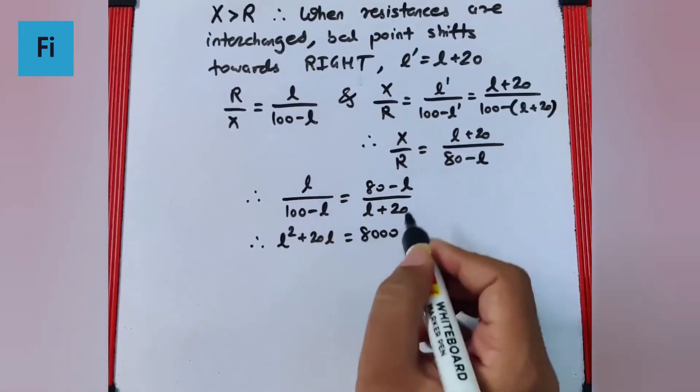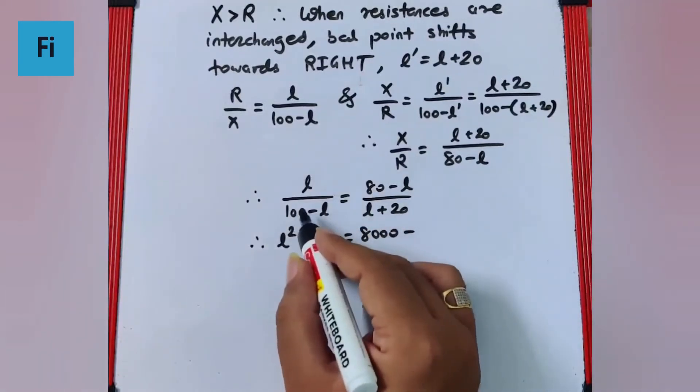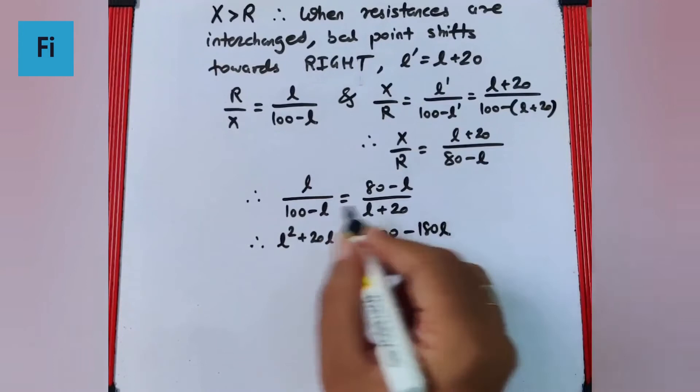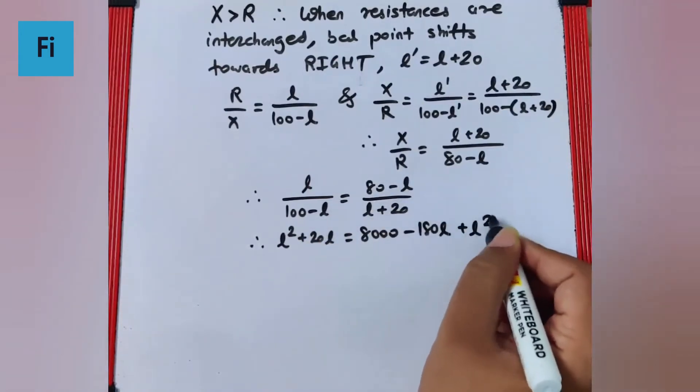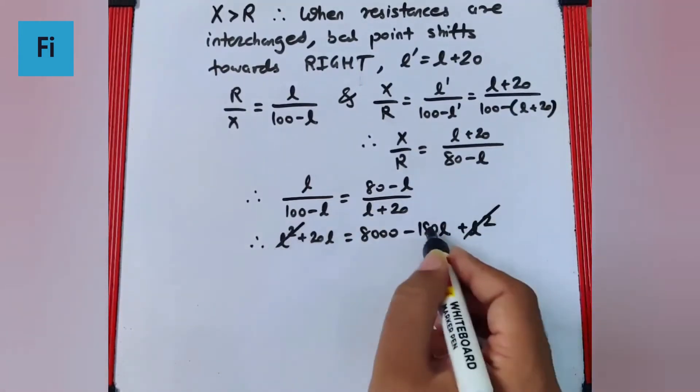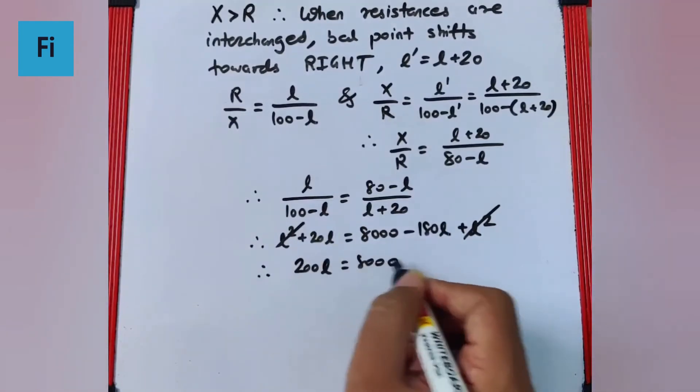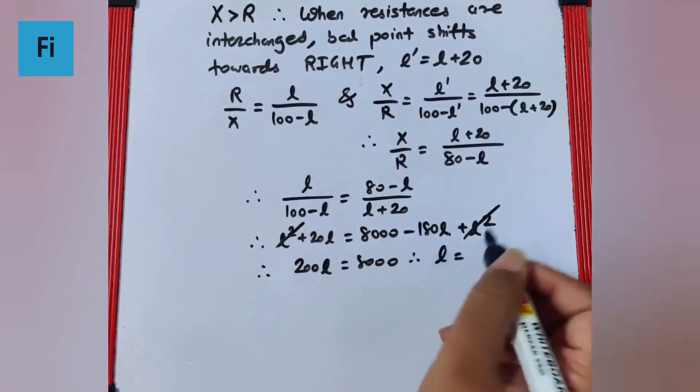Cross multiply so L squared plus 20L is equal to 8000 minus 180L. L squared will cancel, this will be equal to 200L is 8000, that means L is 40 centimeter.